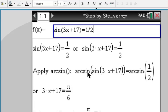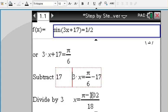So the inverse sine and sine cancel each other out to get 3x plus 17 equal to pi over 6, which is arc sine of 1 half. Then we are subtracting 17 and we're dividing by 3 to get our exact answer: pi minus 102 divided by 18.